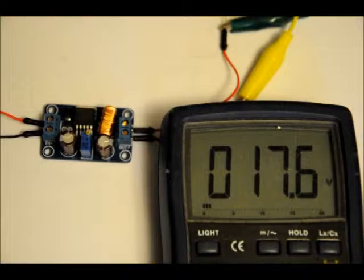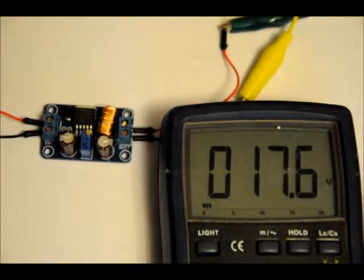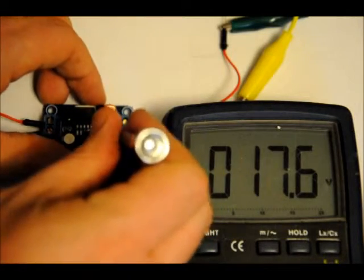So right now I've got about 22 volts at the input, and right now I've got the output tuned to 17.6 volts. So let's just vary that all the way low and all the way high.